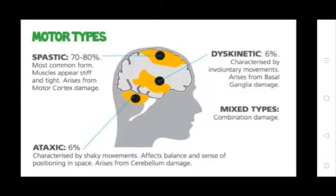Spastic type accounts for 70-80% and is the most common form; muscles appear stiff and tight, arising from motor cortex damage. Dyskinetic type accounts for 6%, characterized by involuntary movement arising from basal ganglia damage. Ataxic type accounts for 6%, with shaking movements affecting balance and sense of positioning in space, arising from cerebellar damage.